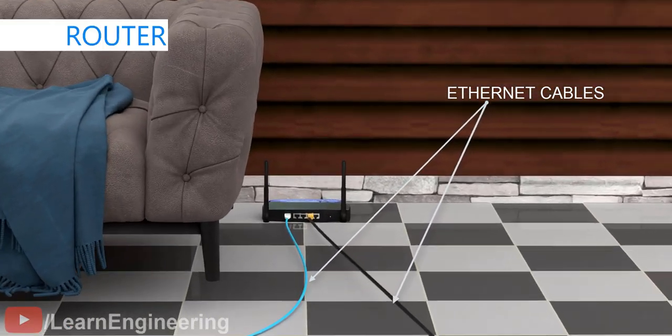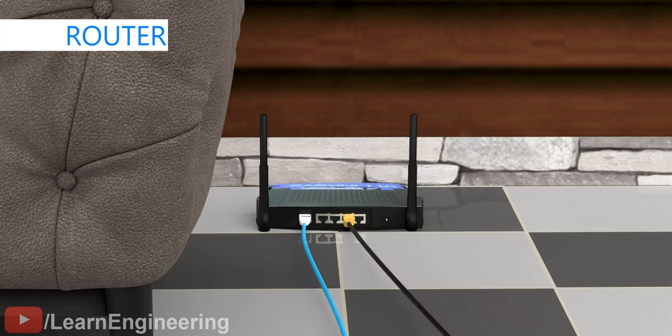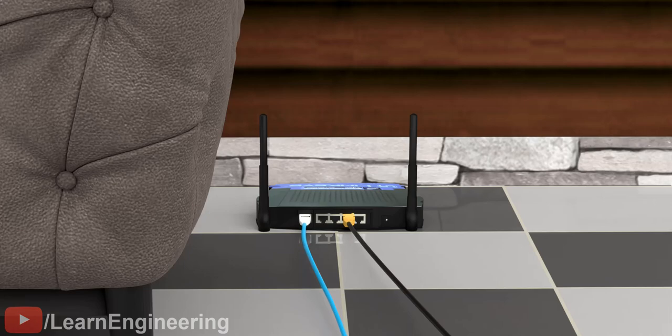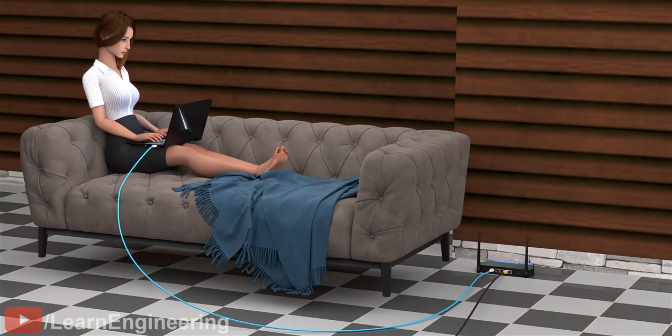The ONT is connected to a router with an Ethernet cable. A router is a networking device that receives, analyzes, and forwards data packets to a device that has the same IP address as the data packet's destination address. The router will be able to understand these electric signals. The connection from the router to the device can be either wired or wireless.